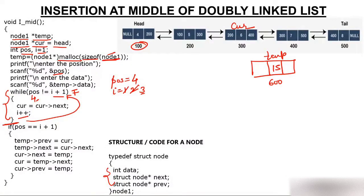After exiting the while loop, we check the condition: is position equal to i+1? Position is 4 and i is 3, so 3+1=4 — condition is true. Now we make the connectivity, and we always make temp node's connections first, then update current.